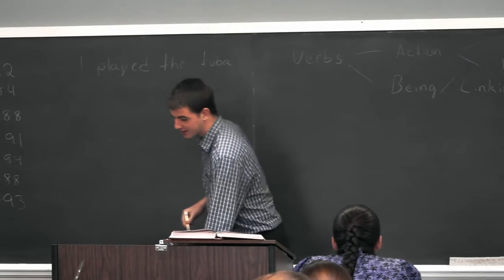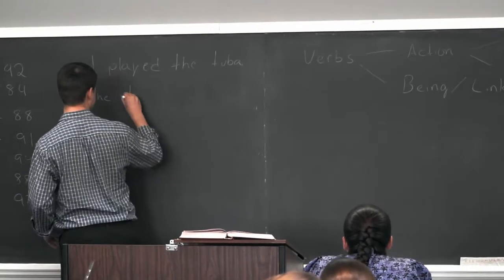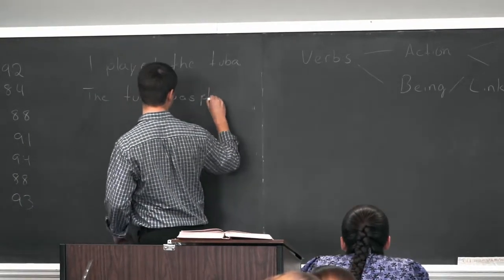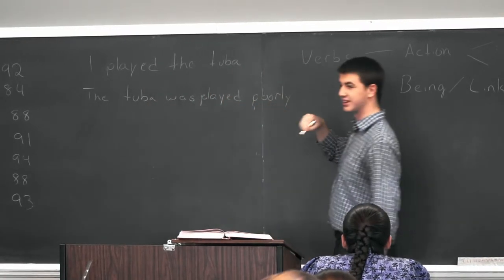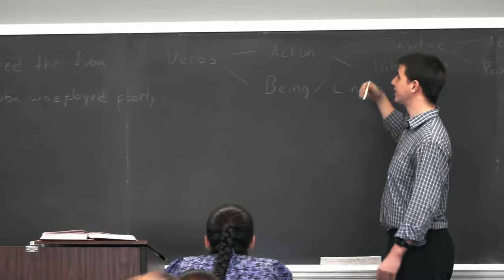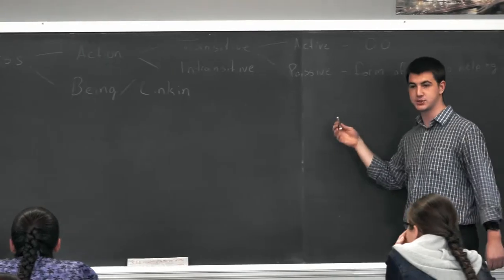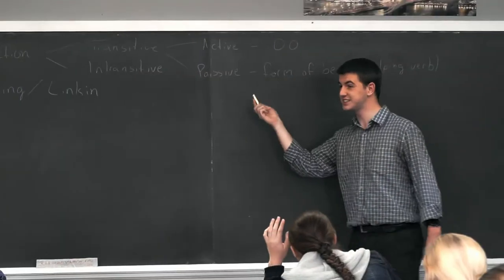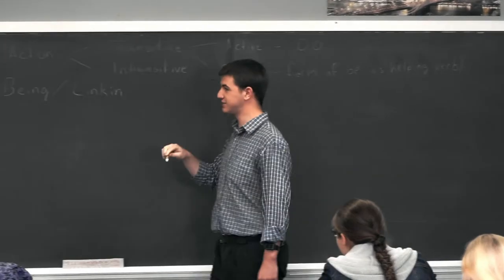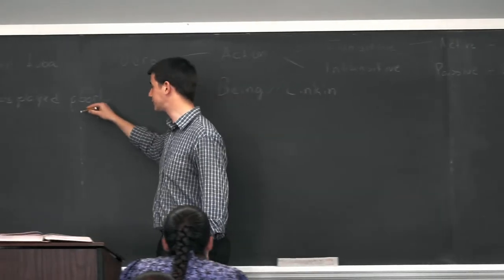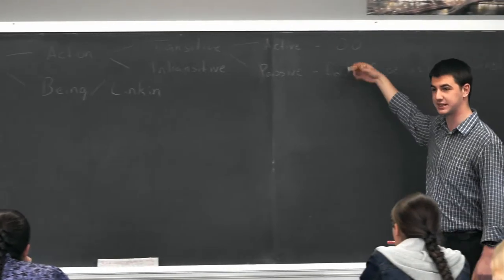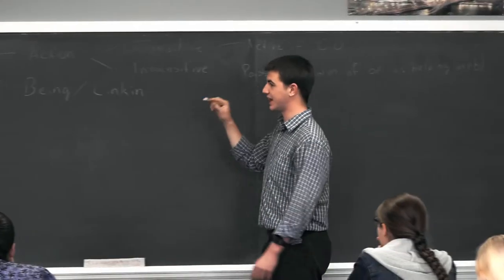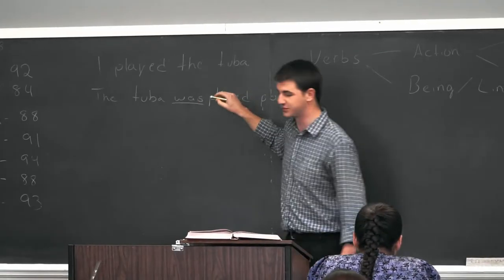So 'the tuba was played poorly.' The tuba was played poorly. What kind of verb, action or being? Action. Still action. Is it transitive or intransitive? It's transitive. What receives the action? The subject receives the action. Tuba was played poorly tells simply how it was played, which makes it what, active or passive? Passive. And we have the form of be here with the verb.